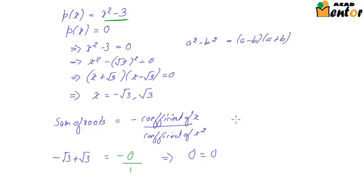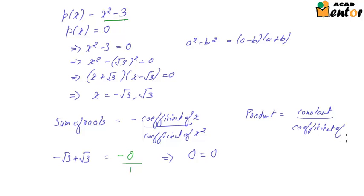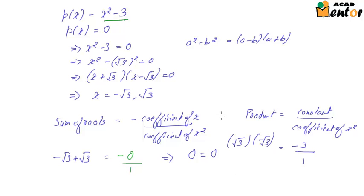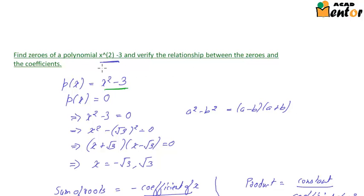Now let's consider the product of roots. The product is given by the constant term divided by the coefficient of x². The constant in our polynomial is -3 and the coefficient of x² is 1. Multiplying the roots: √3 × (-√3) = -3. So the left-hand side is -3 and the right-hand side is also -3. We can now say that the relationship between zeros and coefficients of the polynomial is verified.